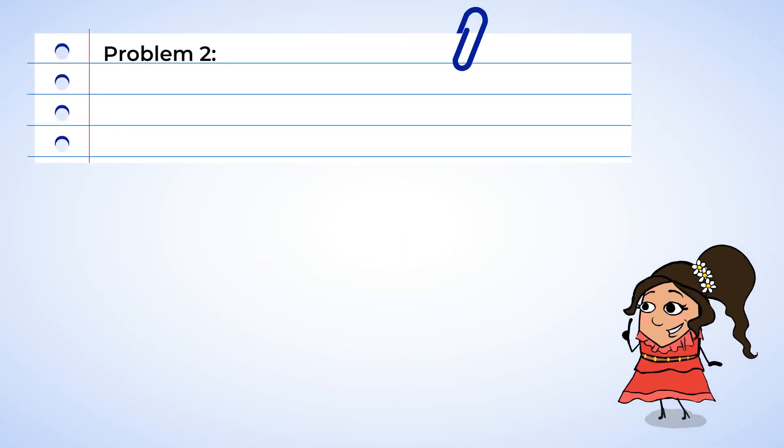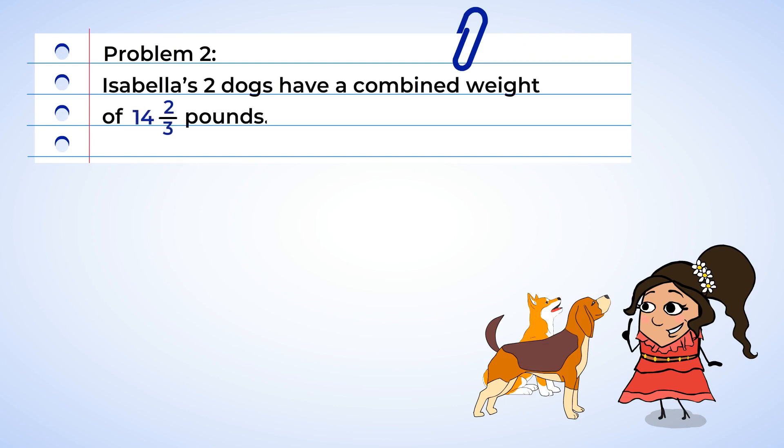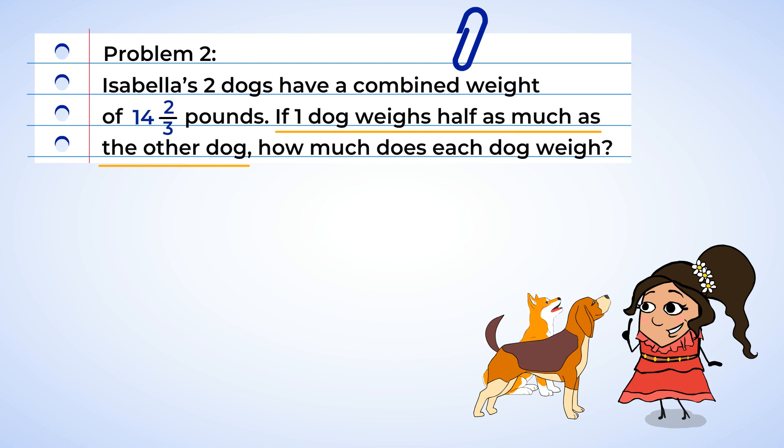Oh, and here's Isabella. She just came back from the vet with her two dogs. She can't quite remember what the weight of each individual dog is. She just remembers that the doctor said their combined weight is 14 and two-thirds pounds. Also, she remembers that one dog weighs half as much as the other dog. Well that's some useful information.